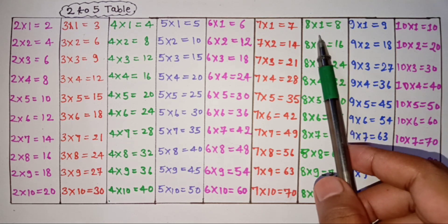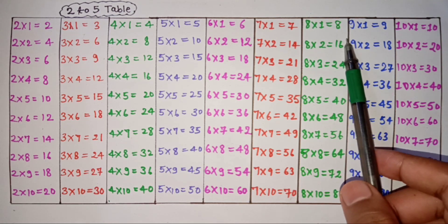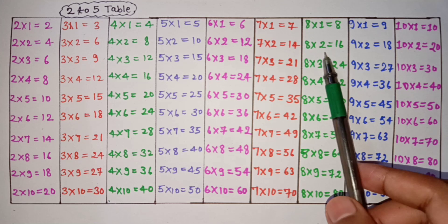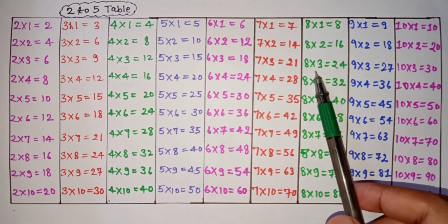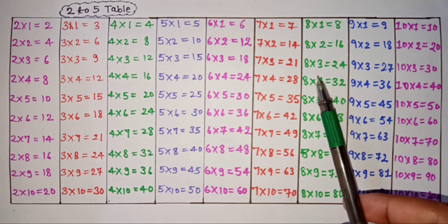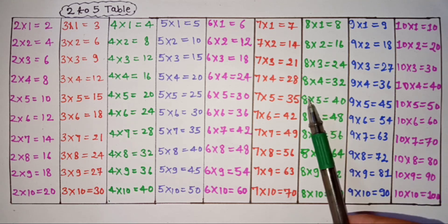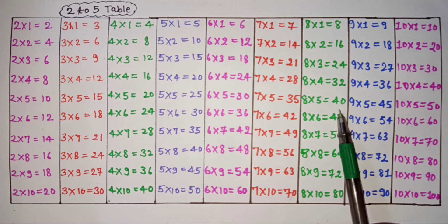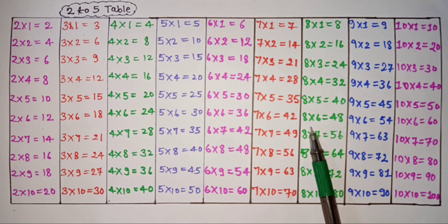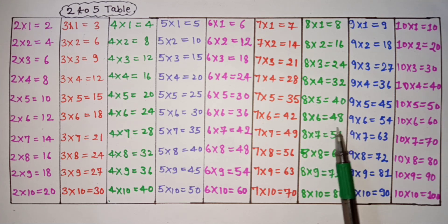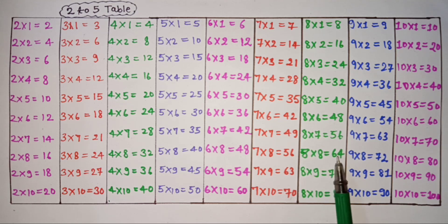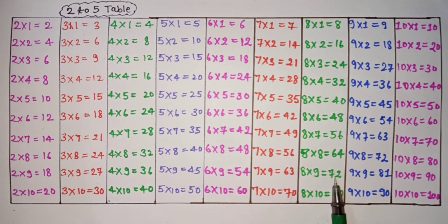Eight ones are 8, eight twos are 16, eight threes are 24, eight fours are 32, eight fives are 40, eight sixes are 48, eight sevens are 56, eight eights are 64, eight nines are 72, eight tens are 80.